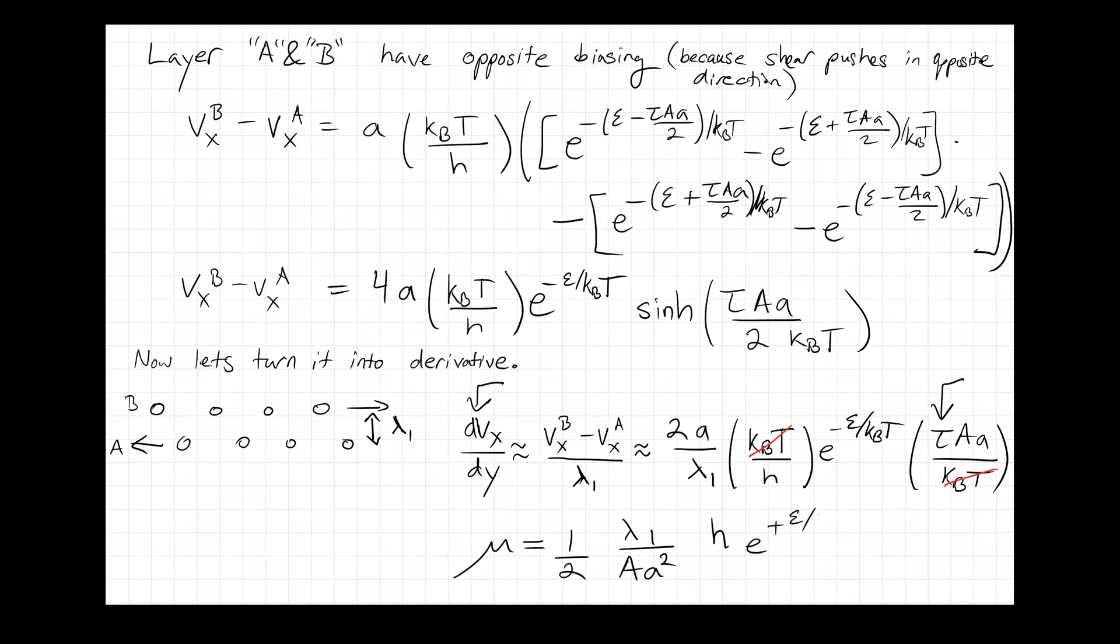So the viscosity, basically, depends on some prefactor that is essentially something that has the size scale of one divided by the volume of one molecule, times h, Planck's constant, but not the barred version.